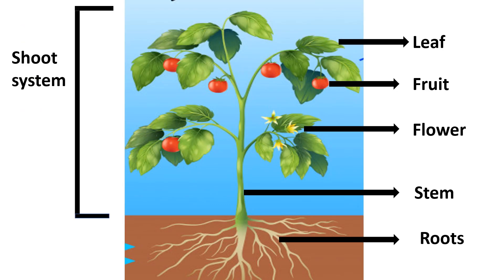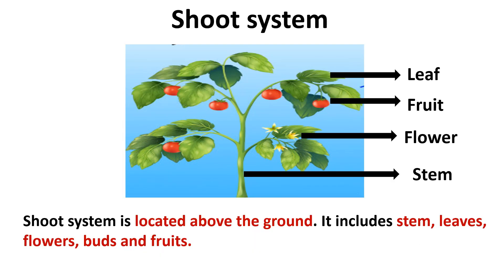The second system is the shoot system. The shoot system is located above the ground. It includes stem, leaves, flowers, buds, and fruits.